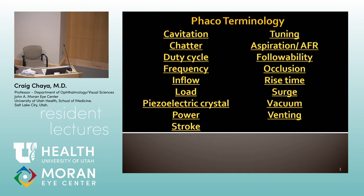In quadrant mode, vacuum is on surgeon control — linear. Once you've chopped up the pieces and you're just hanging out in the center of the eye, you want to control how fast you emulsify the piece and that followability. If you don't need a ton of vacuum, you modulate with your foot. You can step deeper into position three to hold a piece or do another chop. Vacuum and aspiration flow rate have that diagonal — under surgeon control.